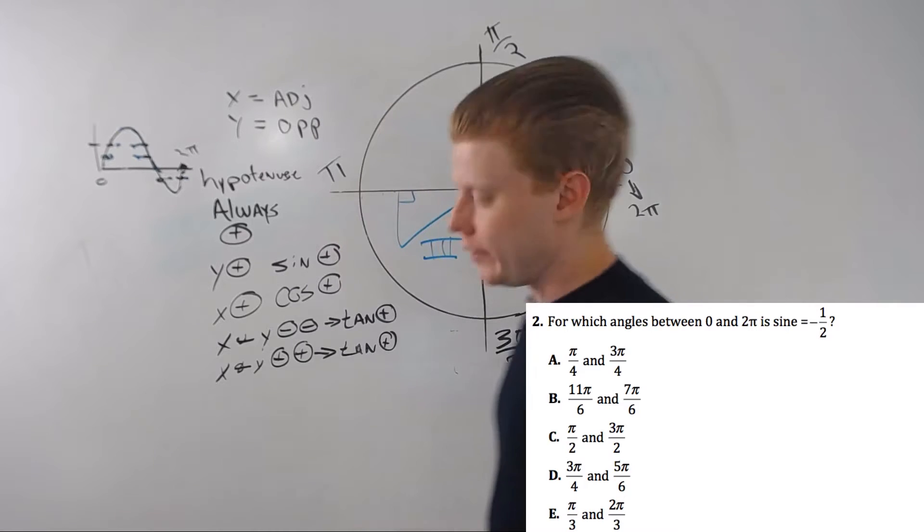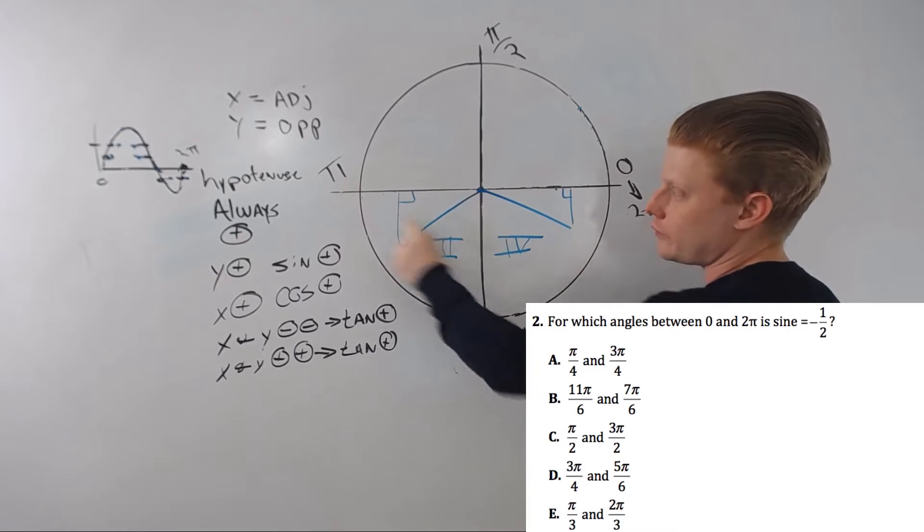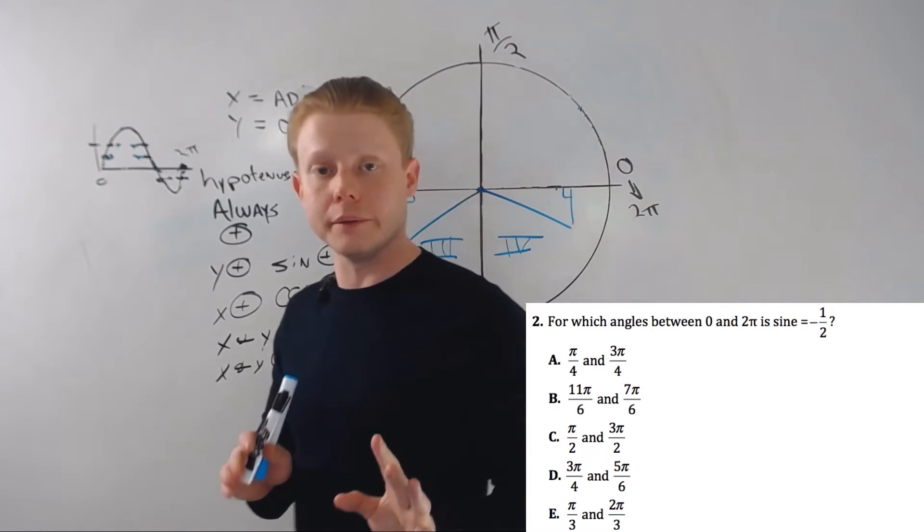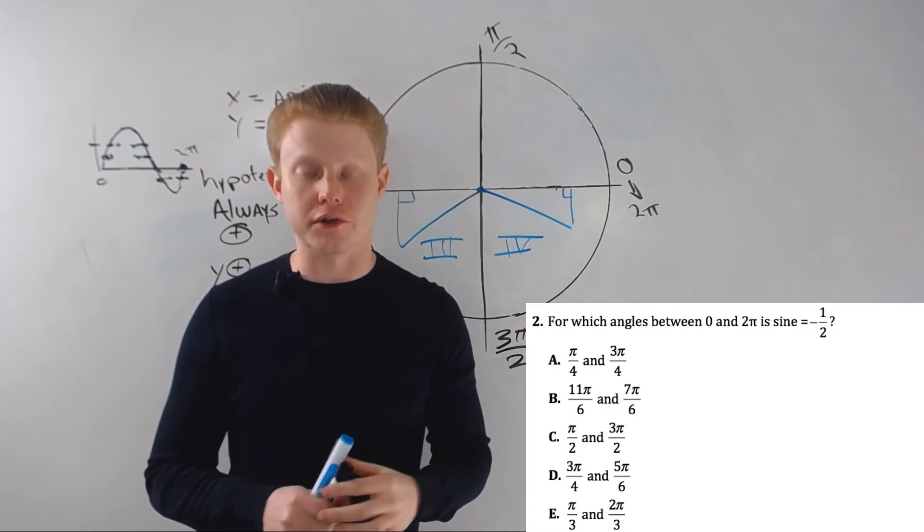11 pi over 6. Okay. Well, that's definitely bigger than 3 pi over 2. Okay. So that's over here. 7 pi over 6. Okay. I can stop looking. I really, really could. But because it's a video and while you're practicing, you may want to do it this way, I'm going to keep on going.